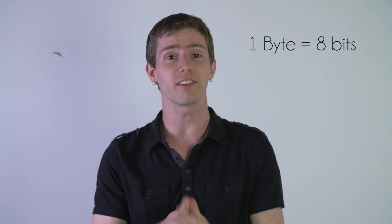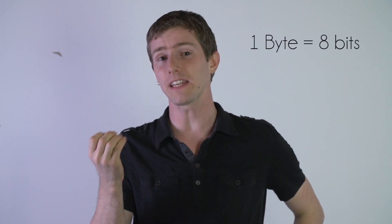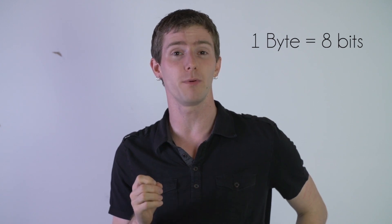Even basic information, like a letter of the alphabet, cannot be expressed as a bit — in spite of the name 'alphabet.' You'll need a byte, which is a series of eight bits, in order to express even something as simple as a character of text.